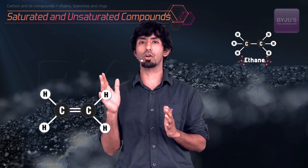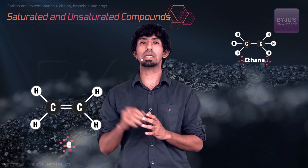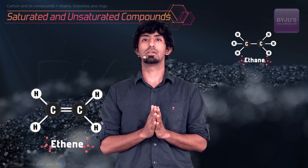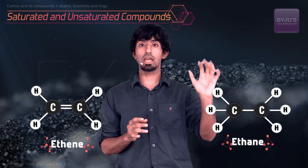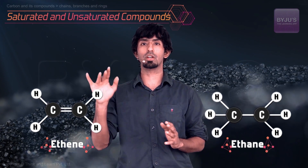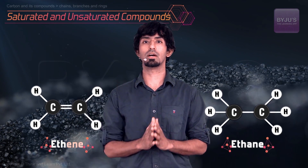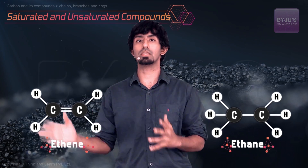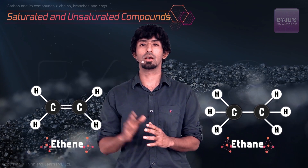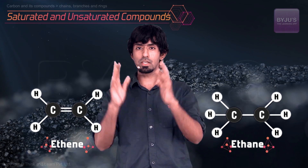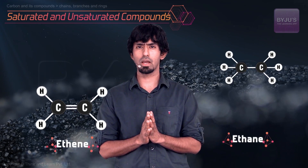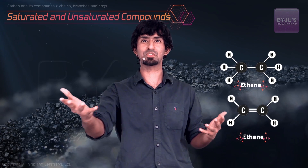So you have two carbons, two hydrogens, and a double bond between the carbons. That previous one was called ethane — this one is going to be called ethene. So you have ethene here, and the obvious next question is: one bond is possible, two bonds is possible — why not three bonds?